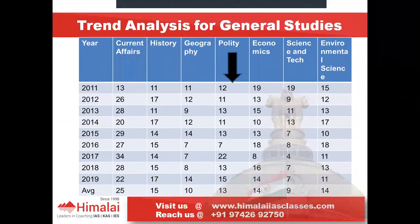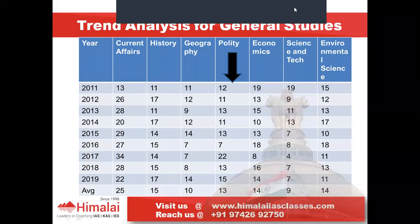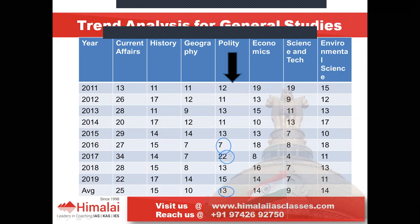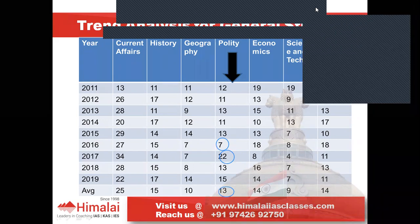If you look at the trend for polity, we see that around 13 questions are being asked every year from this subject. There are years when as many as 22 questions were asked — in 2017 — and there are years like 2016 when only 7 questions were asked. So with an average of 13, it makes it one of the very important subjects, including the static portion of the syllabus.